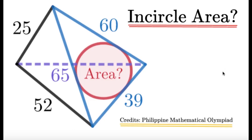Hello, it's Stumplet here. Here's an item on geometry. Given this figure on the left, we're asked to get the incircle's area — find the area of this red incircle of this blue triangle. Credits to the Philippine Mathematical Olympiad for this item. Pause this video if you'd like to give this item a try, but if you're done, let us dive into the solution.